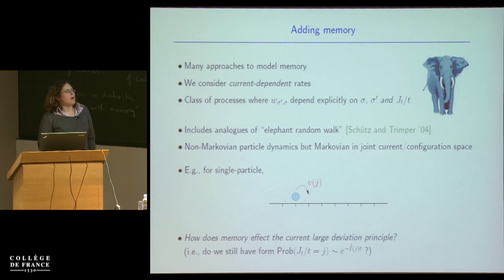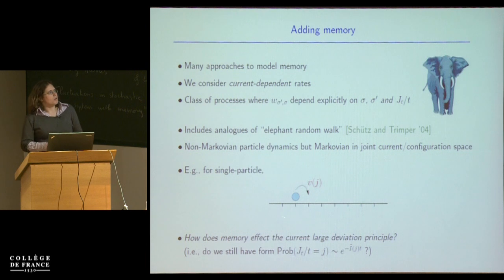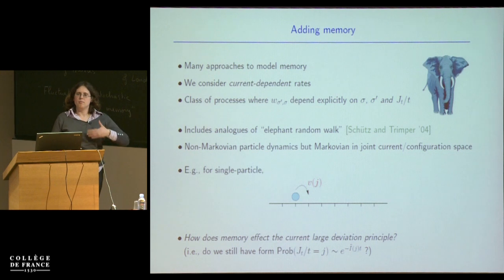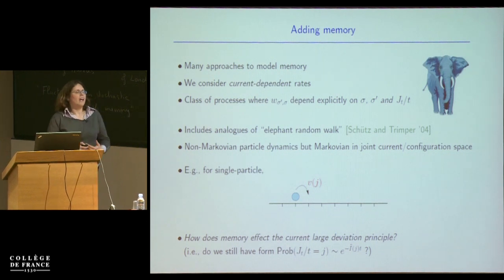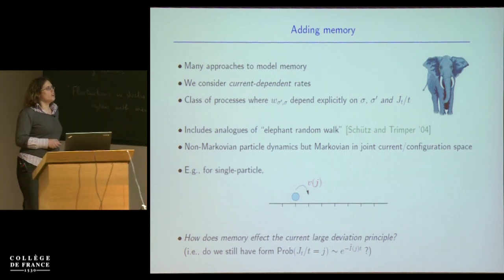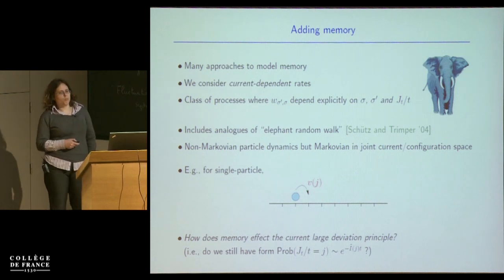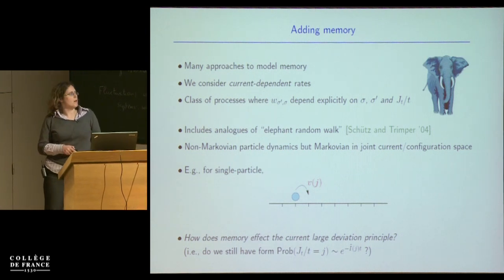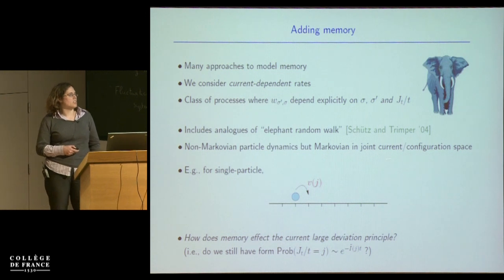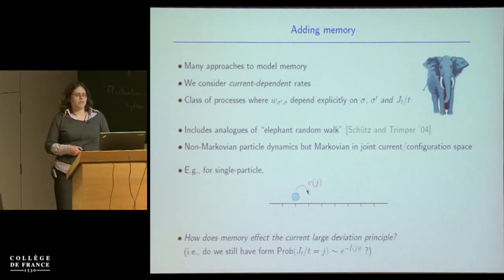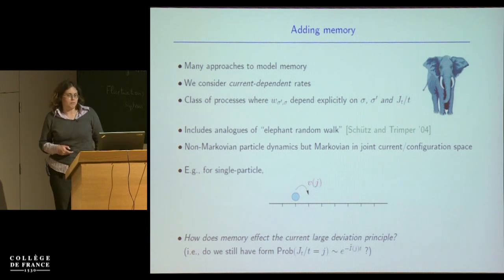You can add this kind of current-dependent memory to the rates in any interacting particle system. Then you can ask: how does this memory affect the current large deviation principle? Do we still have something of that form, and if so, can we calculate the rate function?